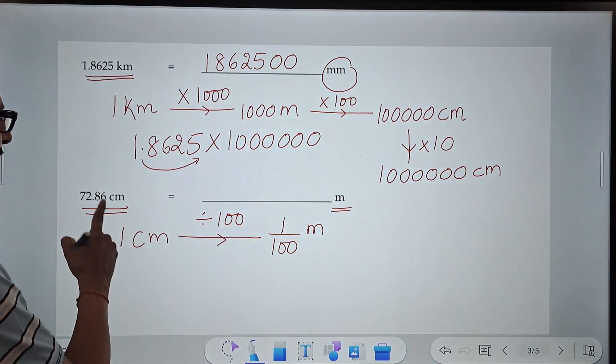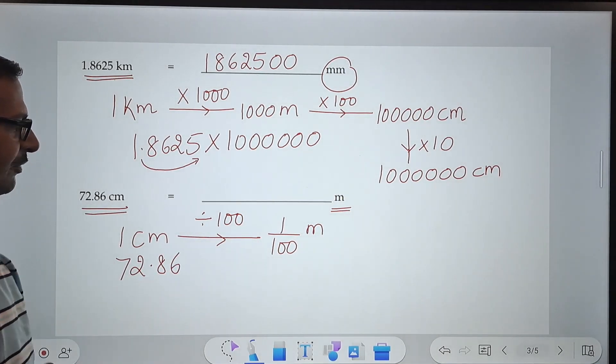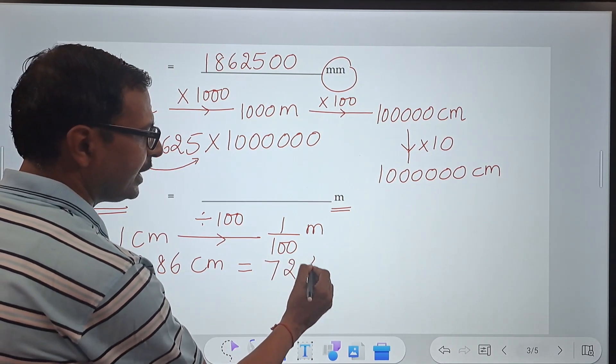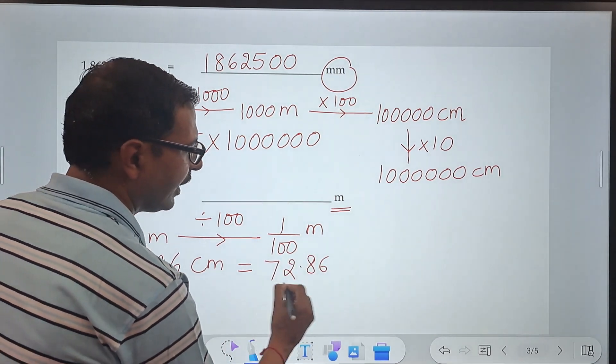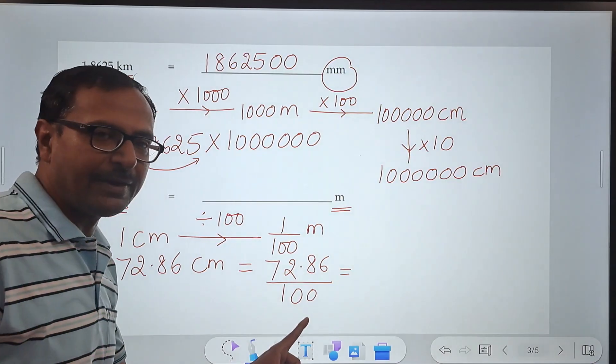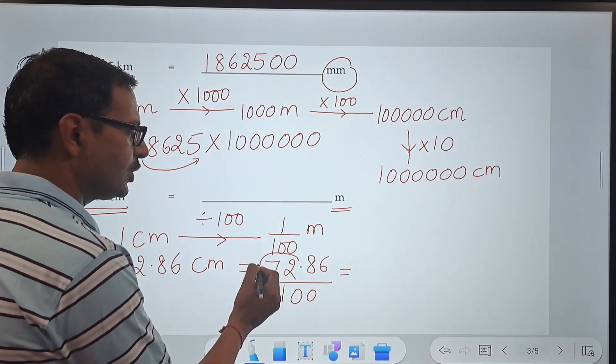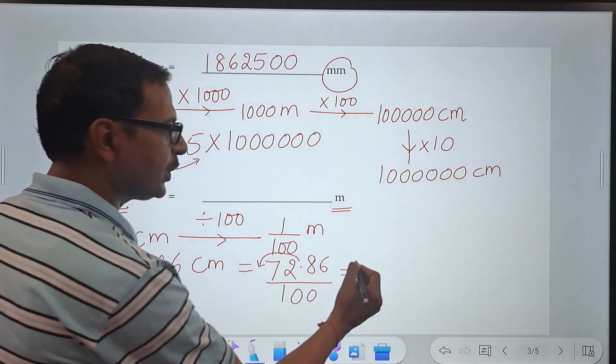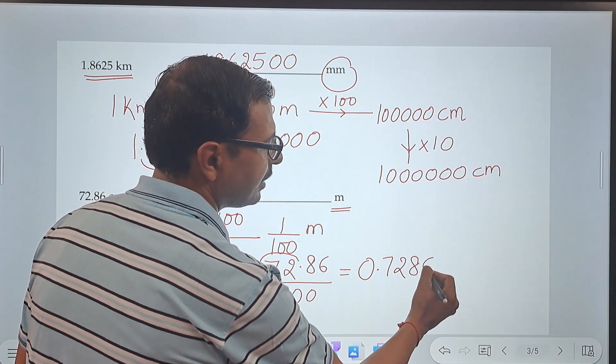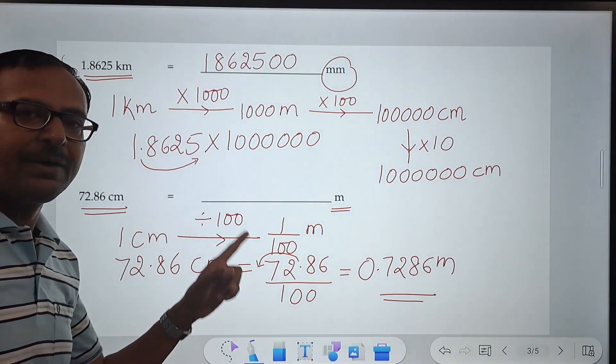You can convert that very easily. 72.86 centimeters will be converted to meters if you divide 72.86 by 100. And what happens when you divide quantities by 100? The decimal shifts two digits towards the left. So if you shifted two digits towards the left, you are going to get 0.7286 meters, which is the exact conversion required in this question.